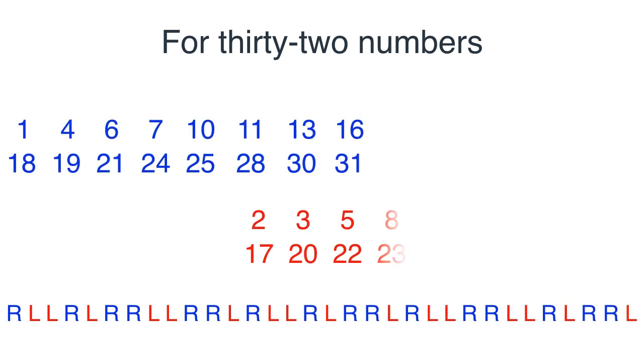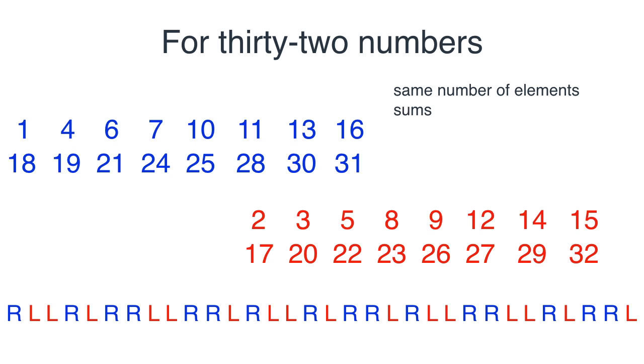For 32 numbers, all I have to do is do my sequence, cut them into two, and then I have the same number of elements, the same sums, the same sums of squares, the same sums of cubes, and the same sums of fourth powers.